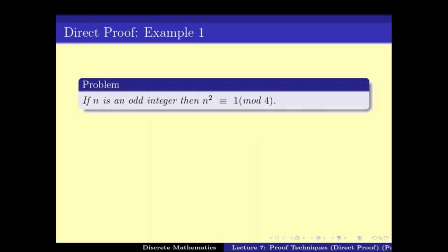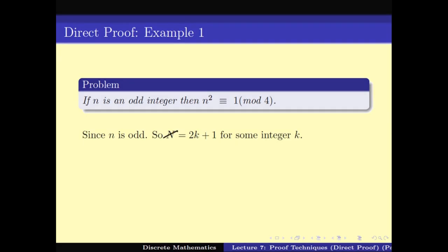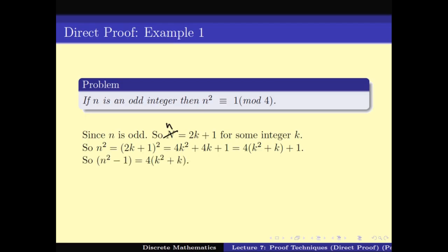Let us start with the first problem. It is given that n is an odd integer; prove that n squared is congruent to 1 mod 4. If n is an odd integer, that means n equals 2k plus 1 for some integer k — that is the definition of oddness. If that is the case, then n squared equals 2k plus 1 whole square, which is 4k squared plus 4k plus 1, which can be written as 4 times the quantity k squared plus k, plus 1.